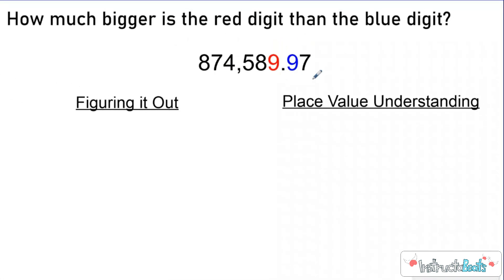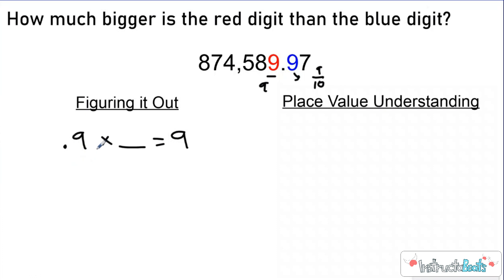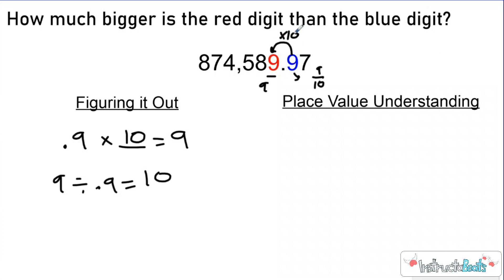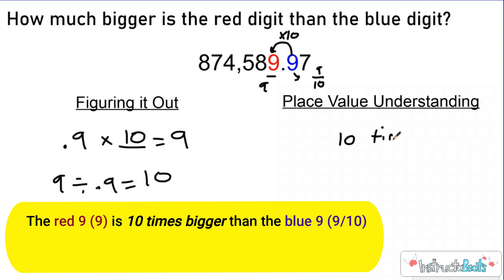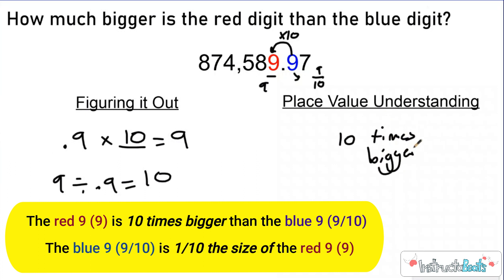Let's take a look at another one. How much bigger is the red digit than the blue digit? Our red digit is worth nine. Our blue digit is worth nine-tenths because it's in the tenths place. So nine-tenths times what is going to get me nine? I need to move my decimal one place to the right, so I need to multiply by ten. If you just use your place value understanding, you went one place value to the left, and each move to the left is ten times bigger — so the red nine is ten times bigger than the blue nine. It all comes back to understanding place values and our base ten number system.